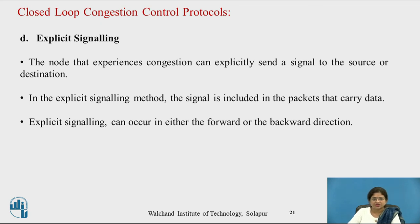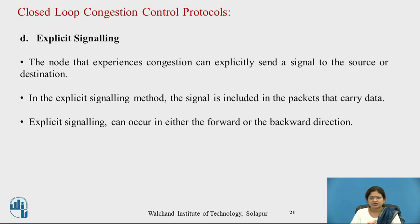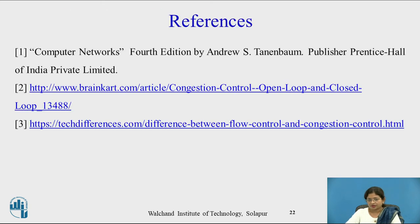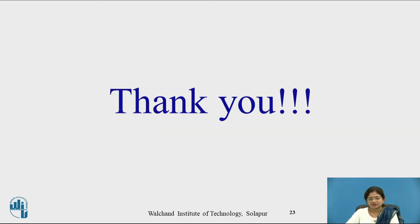Explicit signaling: the node experiencing congestion can explicitly send a signal to the source or destination. In explicit signaling, the signal is included in the packet carrying the data, and the signal can occur in either the forward or backward direction — from source to destination or from destination to source. These are all the policies and protocols provided by congestion control. Thank you.